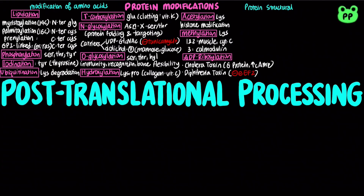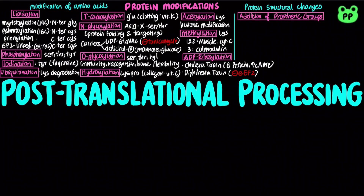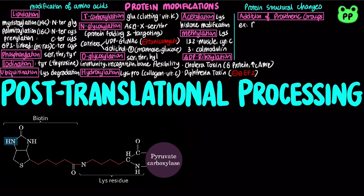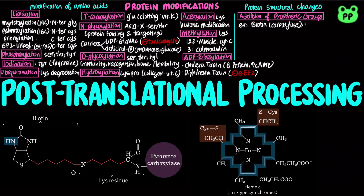Protein structural changes include the addition of prosthetic or permanently bound cofactors, which are required for many enzymes, such as biotin of acetyl-CoA carboxylase and the heme group of hemoglobin or cytochrome C.